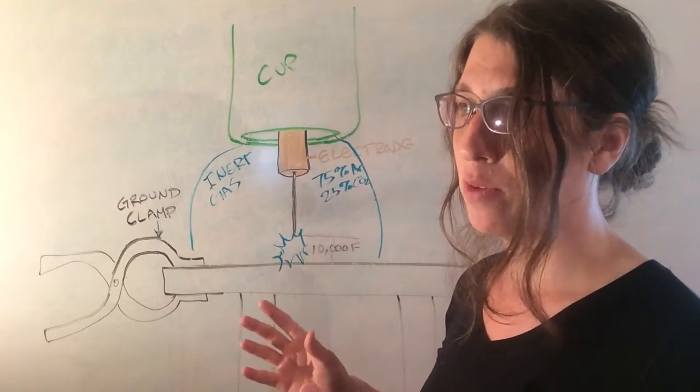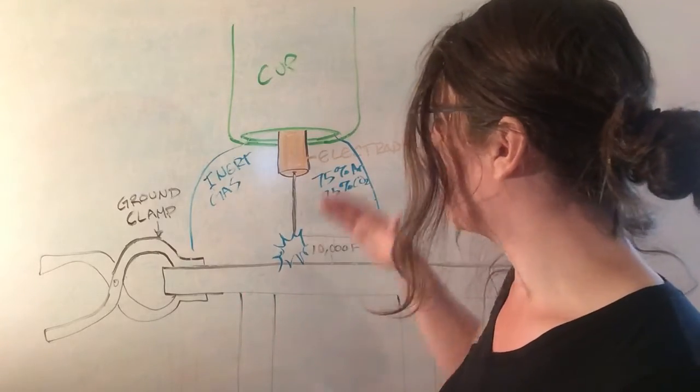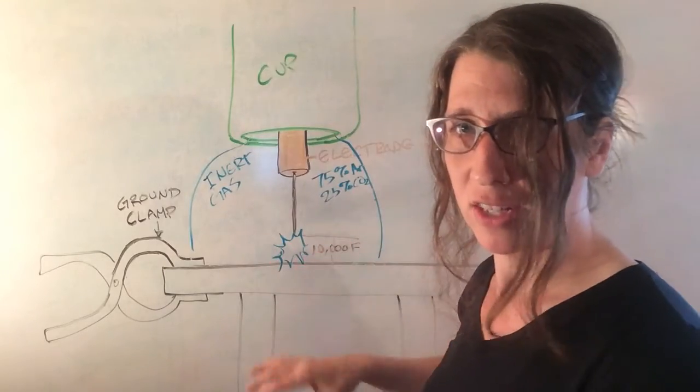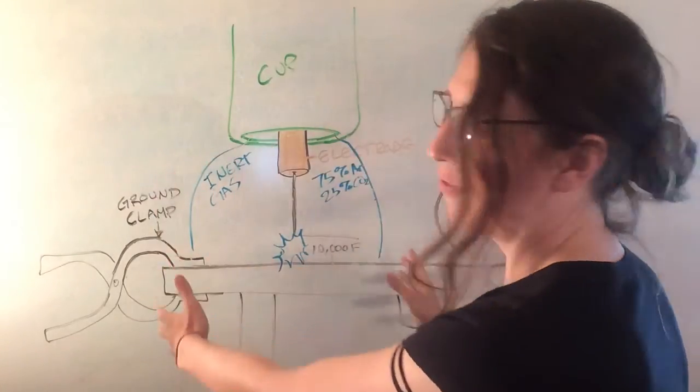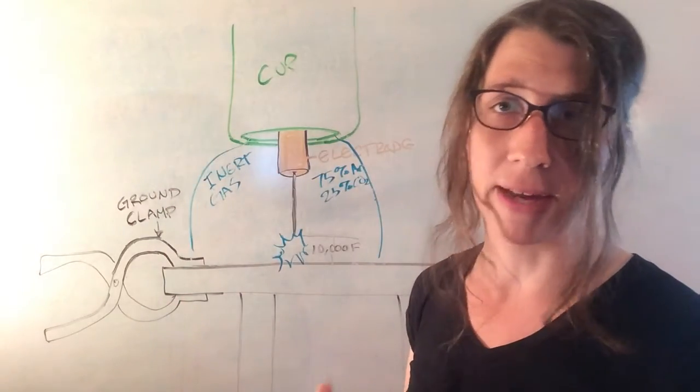So imagine you want to create a nice uniform weld. You want to make sure that you're close to your welding surface, that your metal is not touching so you can create that spark, but that your argon is flowing to prevent any oxygen from getting in there and burning your metal.